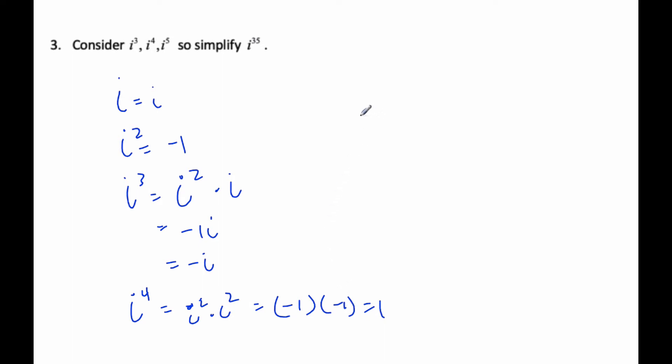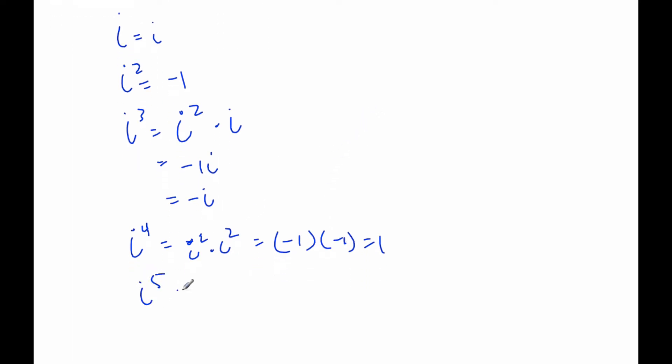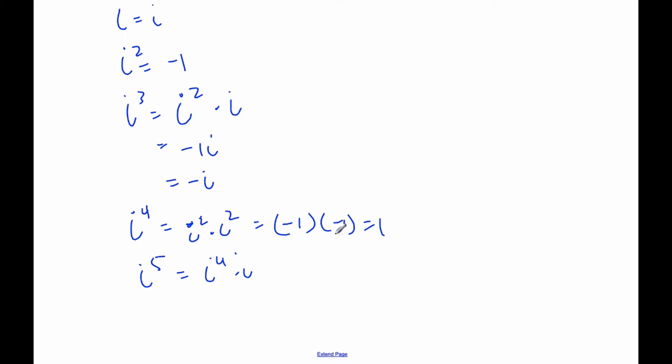And if I think about i to the fifth, well, that's i to the fourth times i. We just figured out that i to the fourth is one, and so i to the fifth is equal to i.